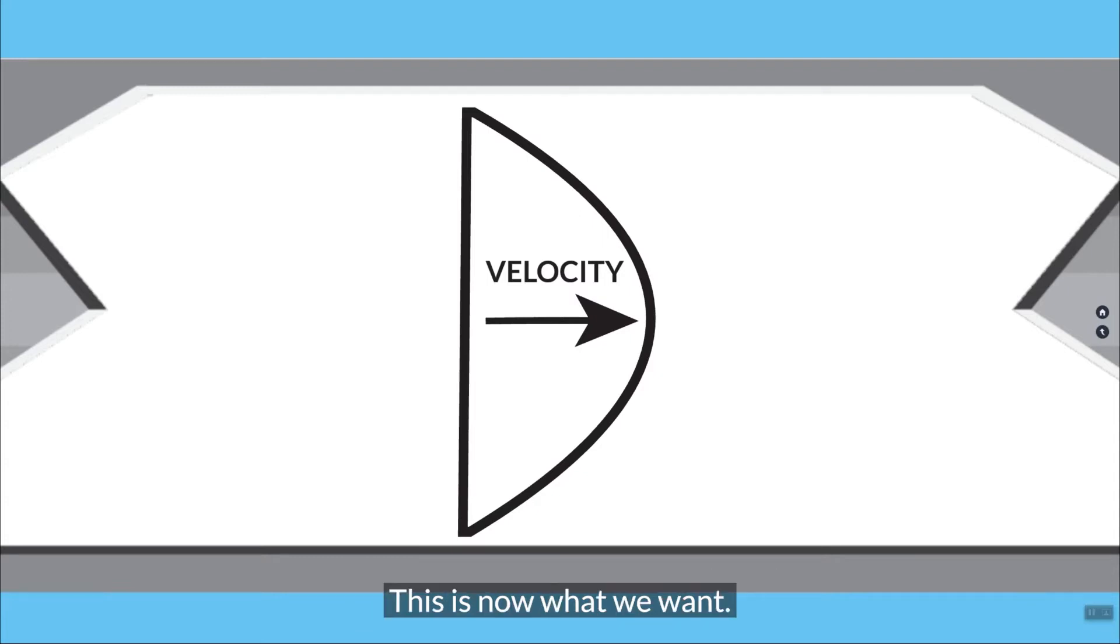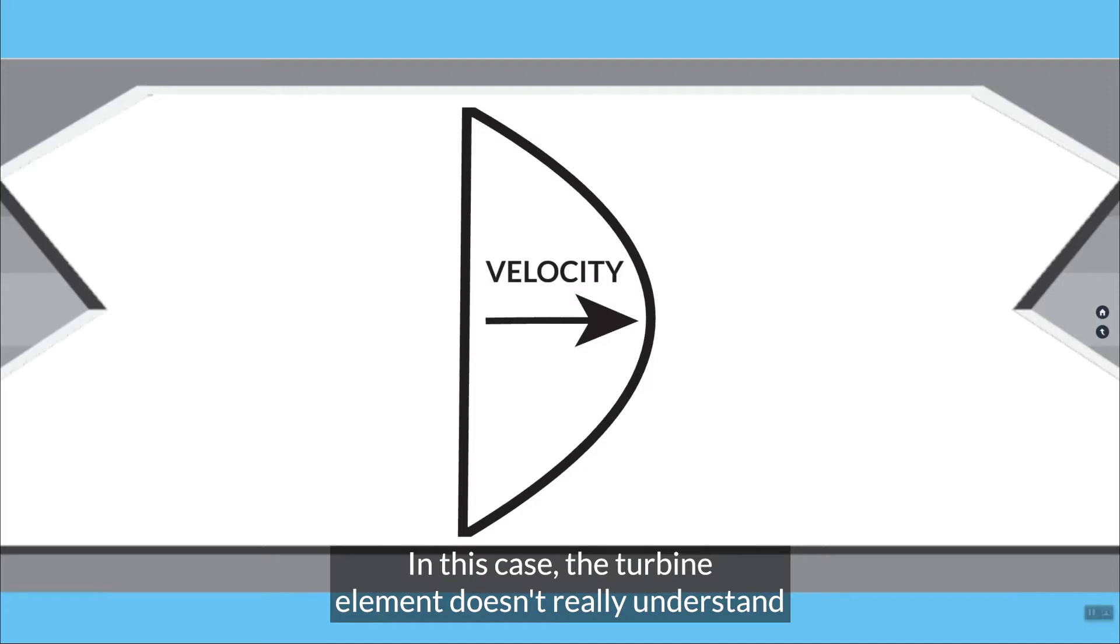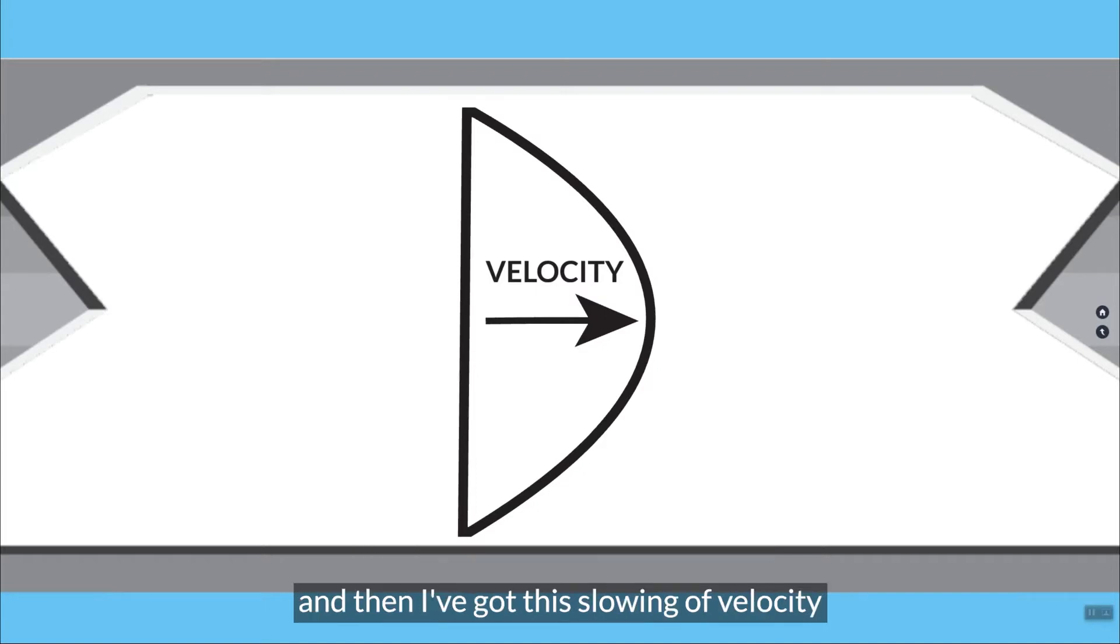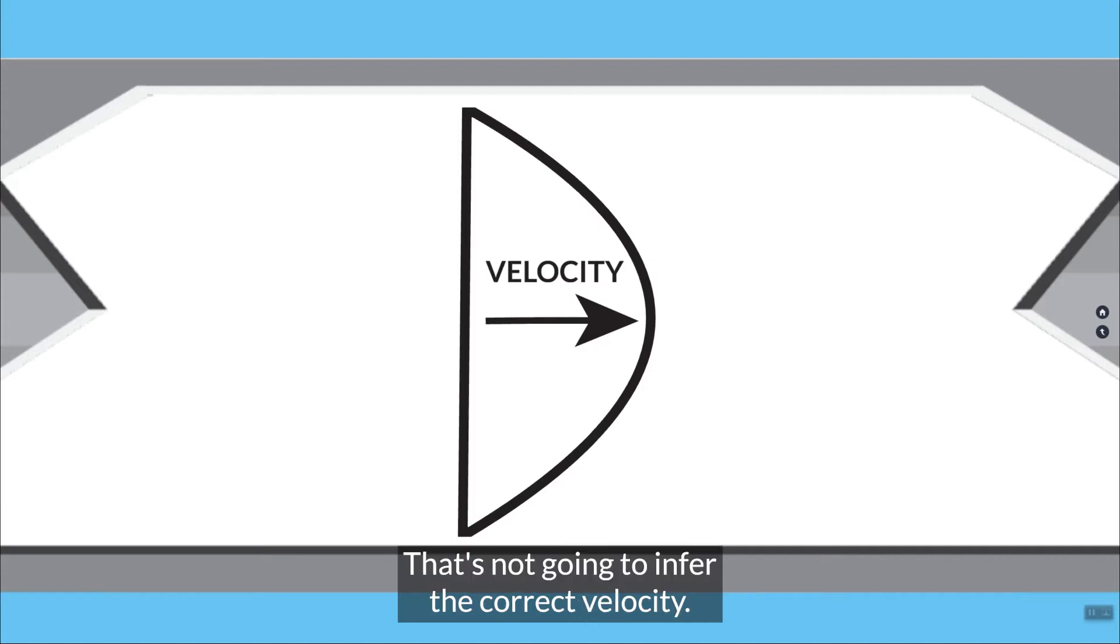This is not what we want. In this case, the turbine element doesn't really understand what it's supposed to do here. I've got this over-speeding towards the middle of the pipe, and then I've got this slowing of velocity near the top and bottom. That's not going to infer the correct velocity.